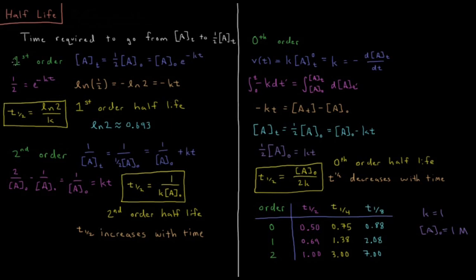For first-order reactions, our integrated rate law says that A(t) — which at the half-life is one-half of A-naught — equals A-naught times e to the minus kt. We want to find the time it takes to reach one-half of A-naught. Dividing both sides by A-naught gives one-half equals e to the minus kt. Taking the natural log of both sides: ln(1/2) equals minus ln(2), so minus ln(2) equals minus kt.